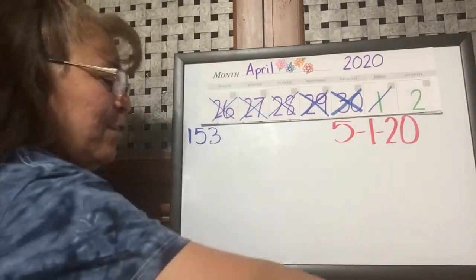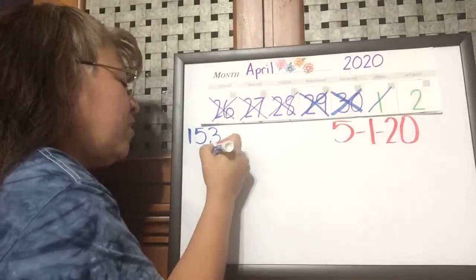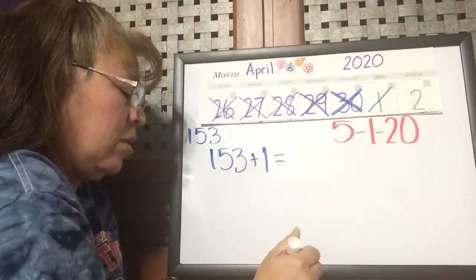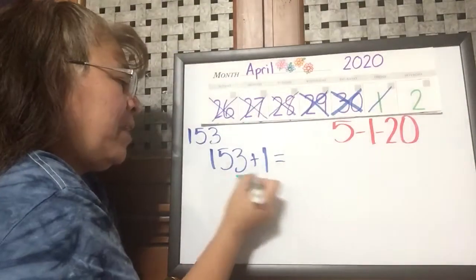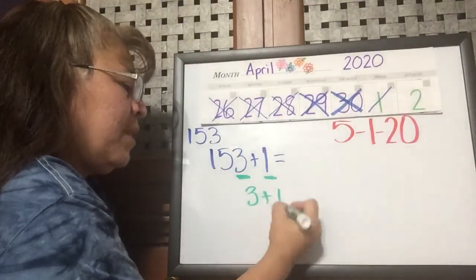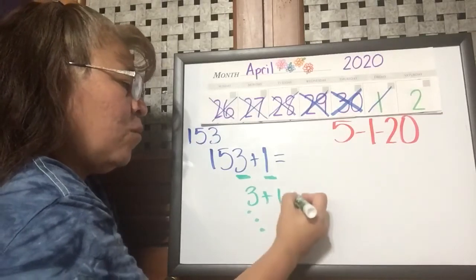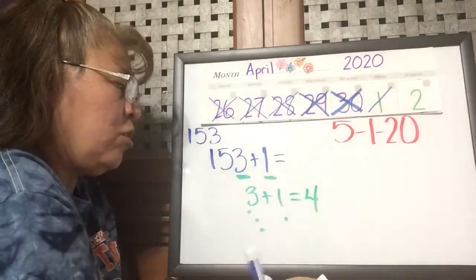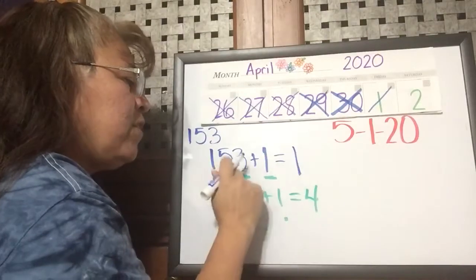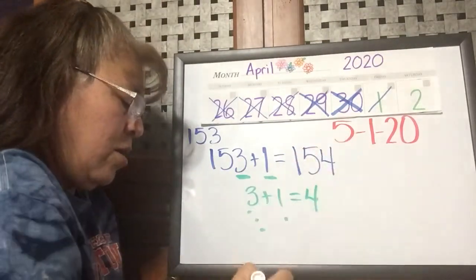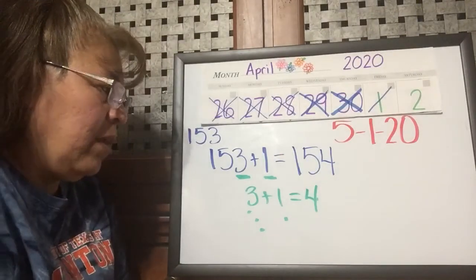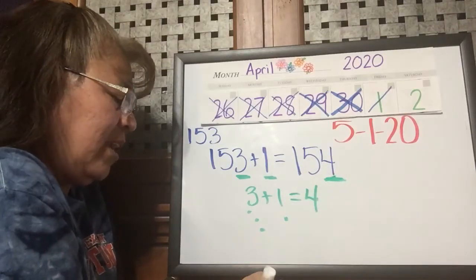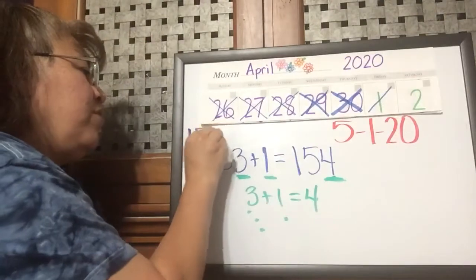So first let's look at this number: 153, just like we've been doing. 153 plus one more equals — and what do we do? We look at the ones place. It's just like if we're adding three plus one: three plus one more equals four. So our number should be 154.